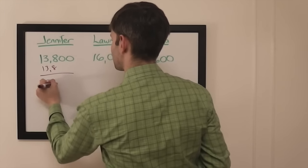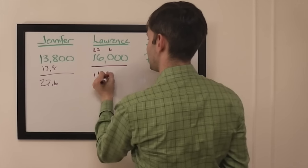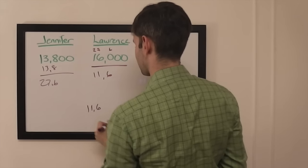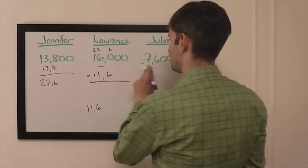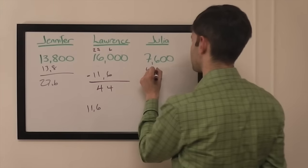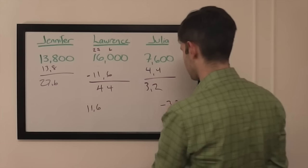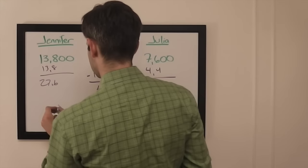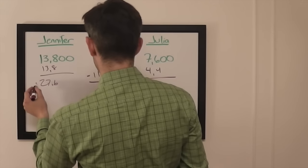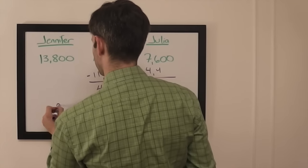Jennifer can get up to 27,600, so Lawrence to cover that can wager 11,600. If he's wrong he'll be left with 4,400, so stay with that.